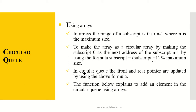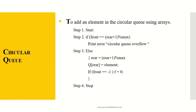The front and rear pointers are updated using that formula. The algorithm to add an element into a circular queue: if front equals (rear + 1) mod max, print error — circular queue overflow. Else, rear = (rear + 1) mod max, then q[rear] = element. If front equals minus 1, then front is initialized to 0. Then stop.